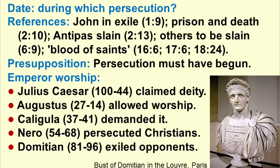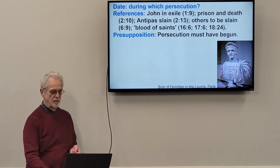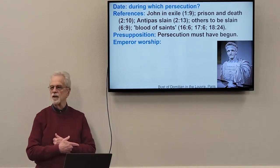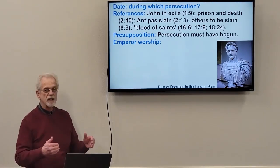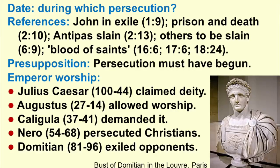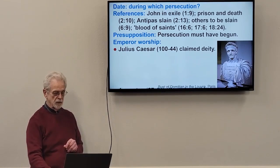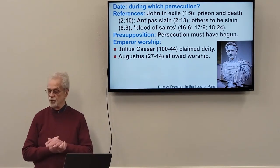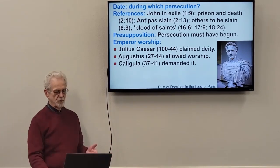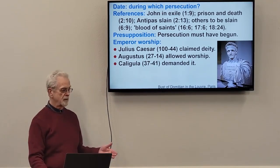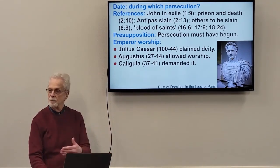Those who reason this way presuppose that persecution must already have begun. Most scholars say the only reason the Roman government would persecute religious followers was if they were refusing to worship the emperor. Emperor worship began with Julius Caesar, and then Caesar Augustus, who allowed himself to be worshipped. Then came Caligula, right in the middle of the apostolic period, who demanded that others worship him and that everyone bow before his statue.